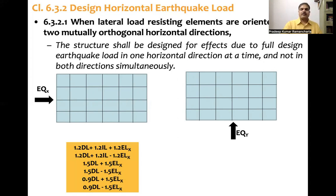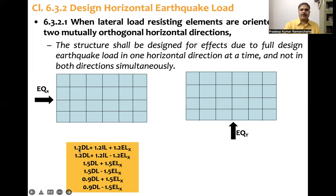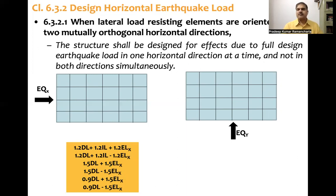Let's look at the X direction load combinations. There are load combinations in addition to 1.5 times dead load plus 1.5 times live load (which has no earthquake). For combinations involving earthquake load: first, 1.2DL + 1.2IL + 1.2EQ-X (positive and negative X — two combinations). Second, 1.5DL ± 1.5EQ-X (positive and negative — two more). Third, 0.9DL ± 1.5EQ-X (again two combinations). This gives six load combinations in the X direction.